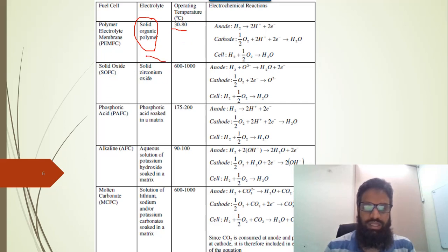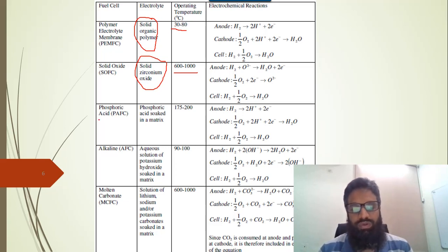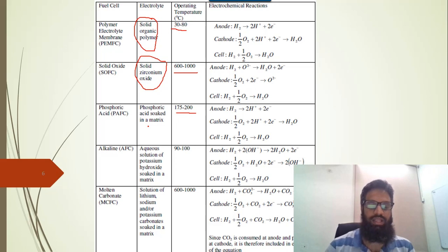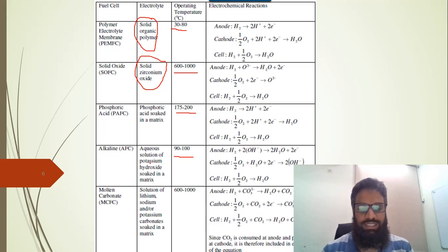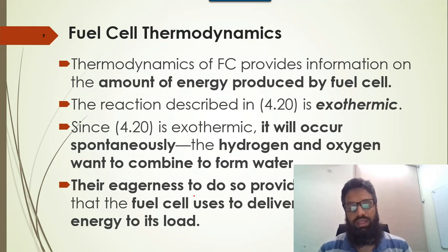The solid oxide fuel cell uses solid zirconium oxide as electrolyte and operates at 600 to 1000 degrees Celsius, requiring warm-up before operation. Phosphoric acid fuel cell operates at 175 degrees using phosphoric acid in a matrix as electrolyte. Alkaline fuel cell operates at 90 to 100 degrees using an aqueous solution of potassium hydroxide. Molten carbonate fuel cell uses a solution of lithium, sodium, or potassium carbonate and also operates at 600 to 1000 degrees.